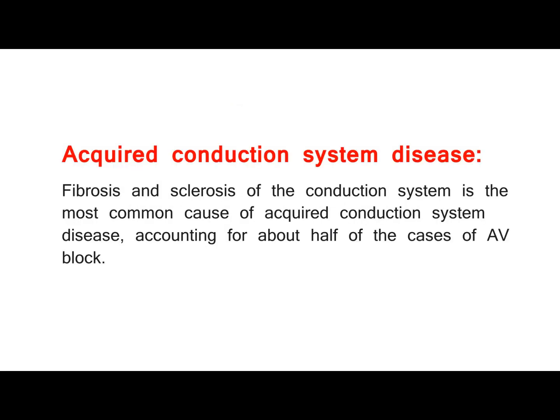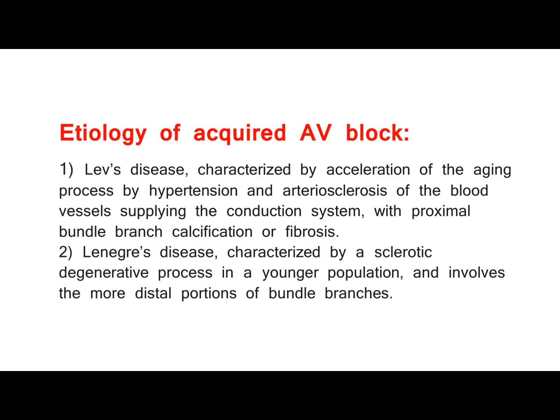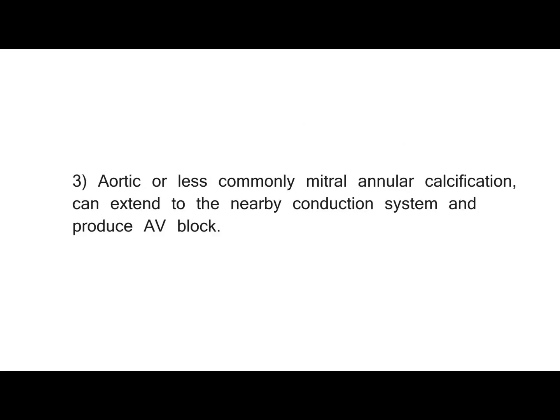Acquired Conduction System Disease: Fibrosis and sclerosis of the conduction system is the most common cause of acquired conduction system disease, accounting for about half of the cases of AV block. Lev's Disease is characterized by acceleration of the aging process by hypertension and arteriosclerosis of the blood vessels supplying the conduction system, with proximal bundle branch calcification or fibrosis. Lenegri's Disease is characterized by a sclerotic degenerative process in a younger population, involving the more distal portions of bundle branches. Aortic or less commonly mitral annular calcification can extend to the nearby conduction system and produce AV block.